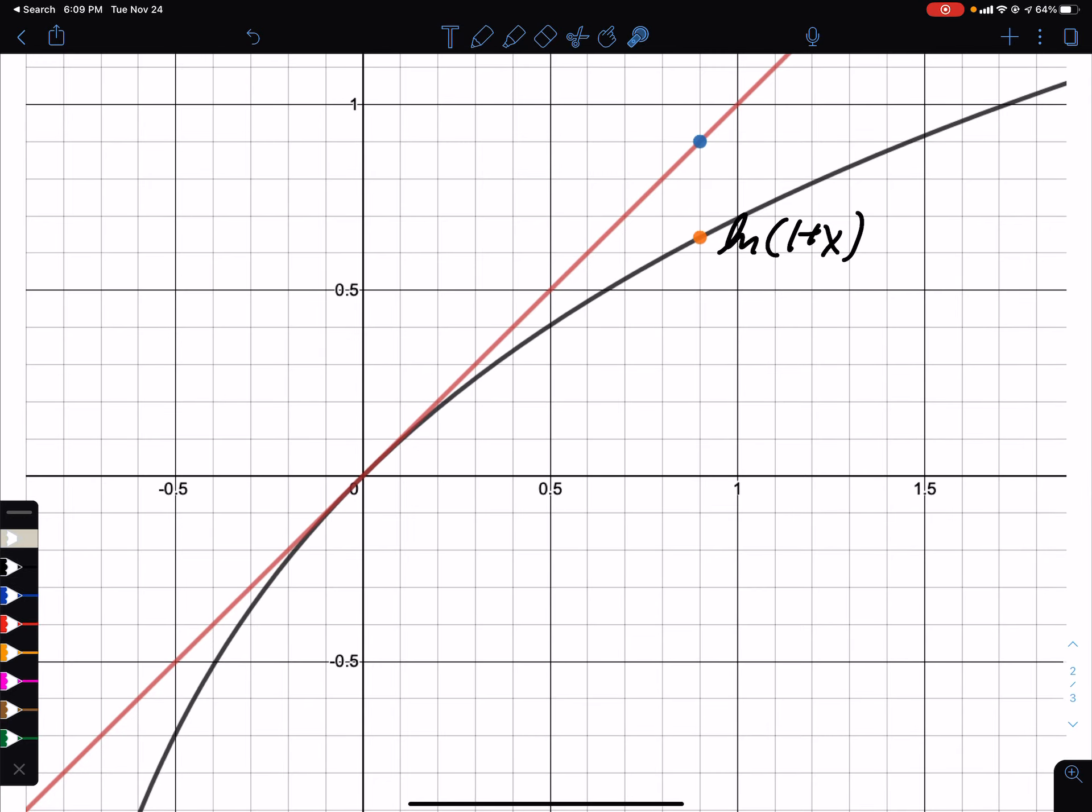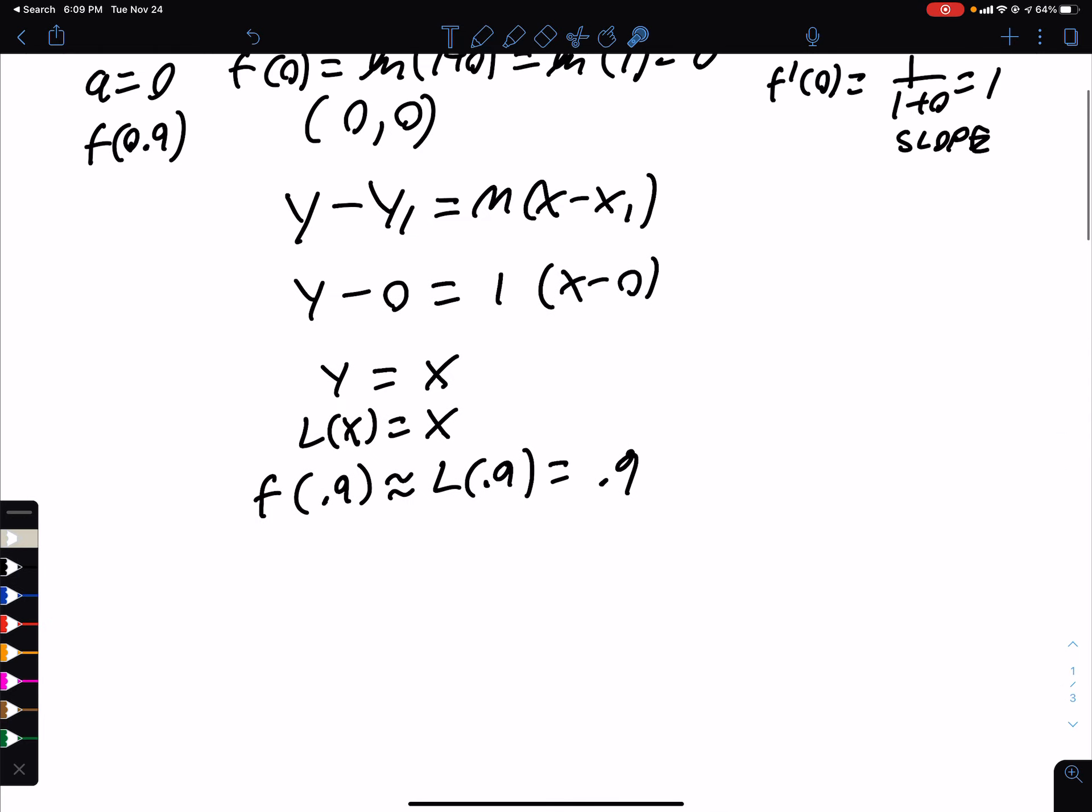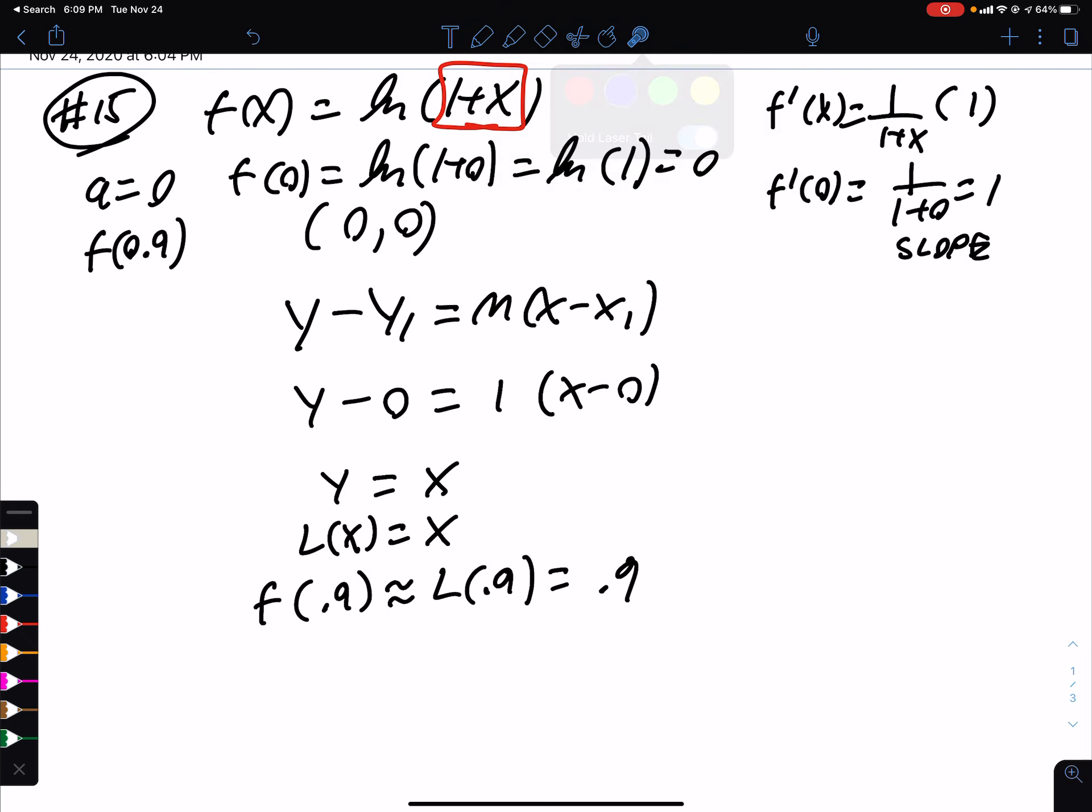And we did the equation of a tangent line at 0, 0. So we saw the point of tangency was 0, 0. We found the slope.